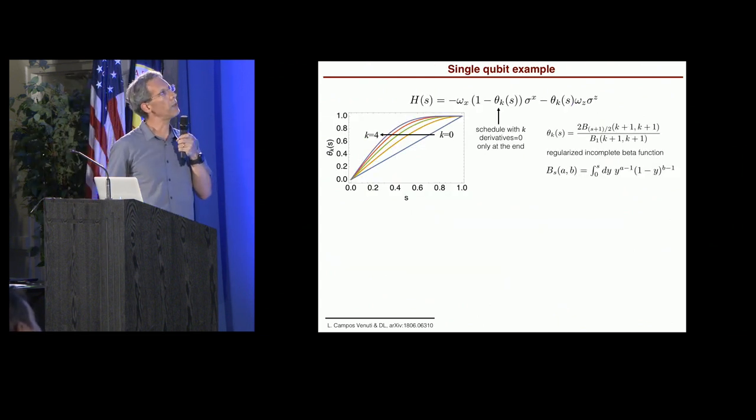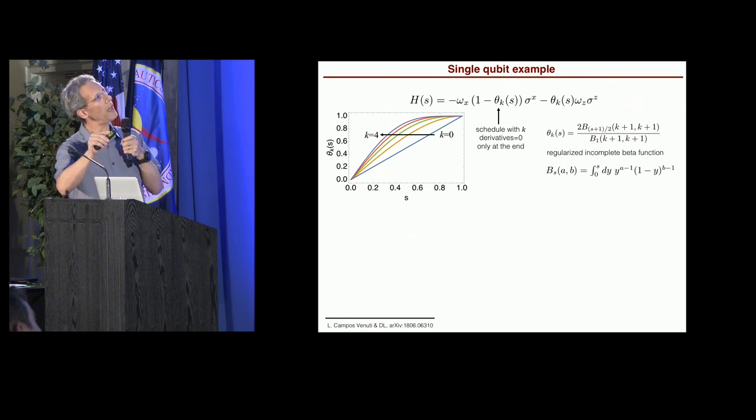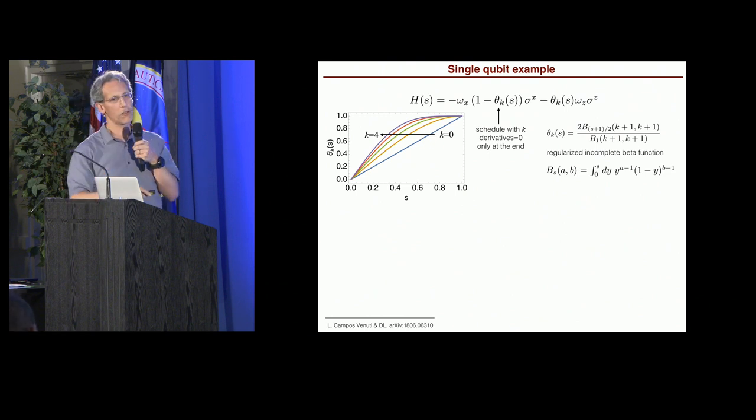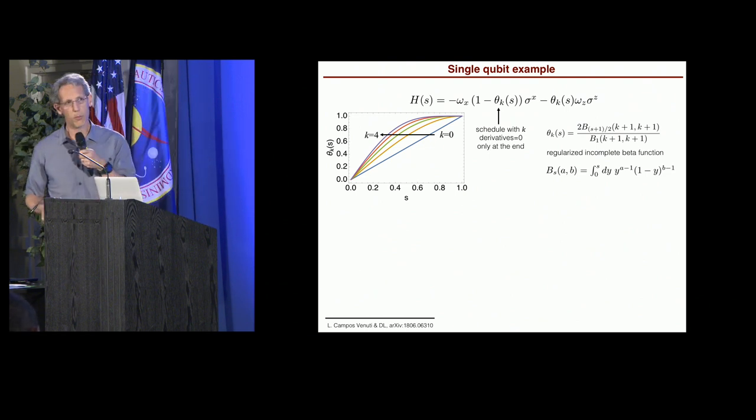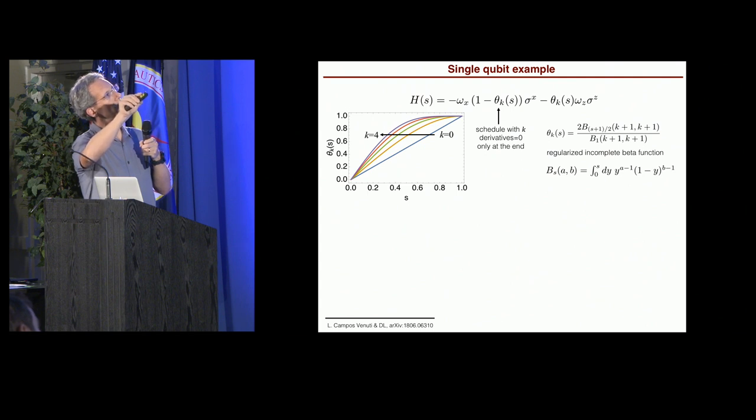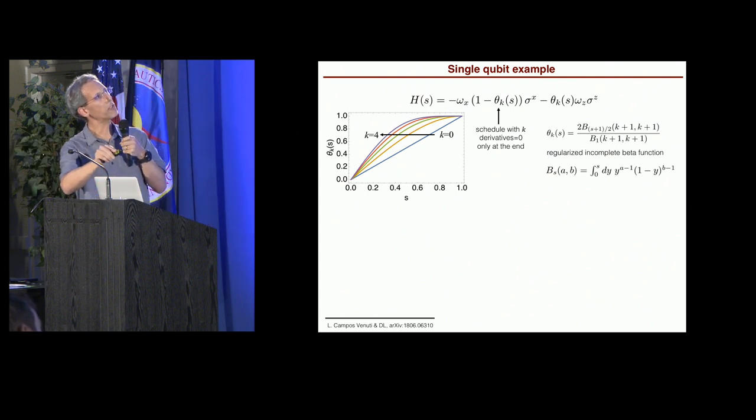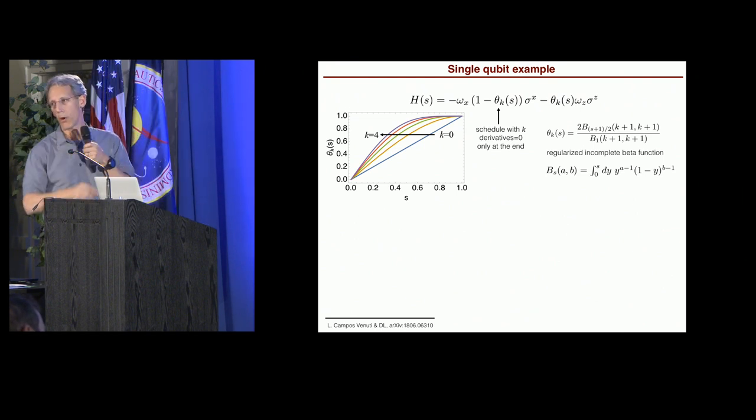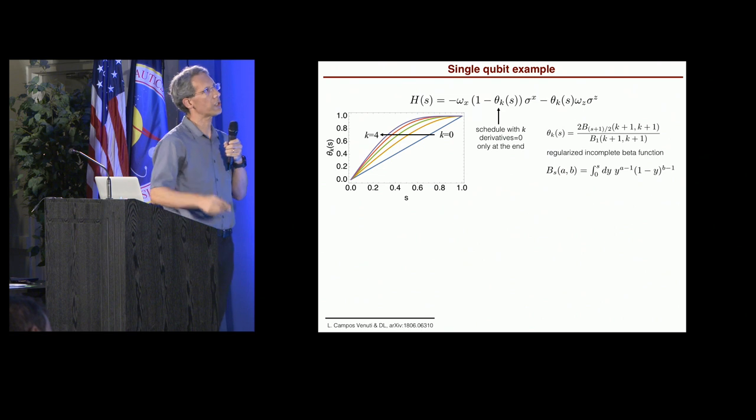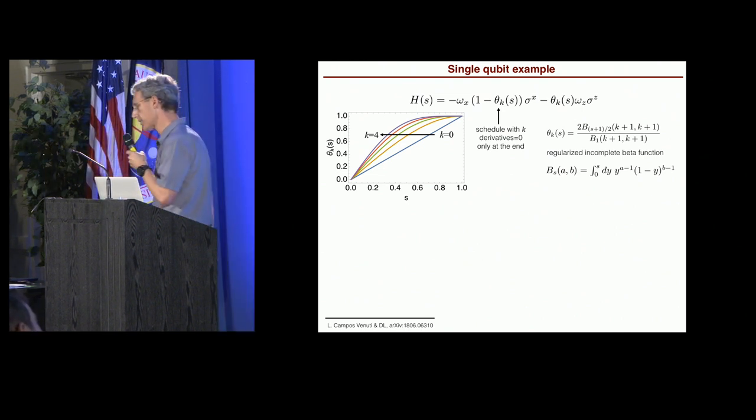So here is a simple example, a single qubit. So this is just interpolating from sigma X transverse field to sigma Z with some schedule, theta sub K, which is chosen to satisfy the condition that I told you about, which is that its derivatives at the boundary go to zero. All right? And so here you see K equals zero is the blue line. K equals four is this extreme line here. No zero derivatives, only the first derivative, second, and so on. All right? So and there's a very nice way to parametrize that in terms of some function. But the point is we're imposing a schedule with derivatives whose derivatives vanish at the boundary, more and more derivatives. All right? So that satisfies the conditions of the theorem.